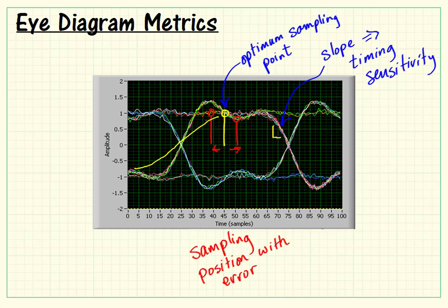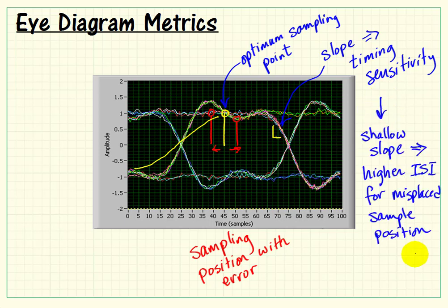So this would be an example of something where we have a more shallow slope. And that says that we have reduced noise margin when we have that sample position error.